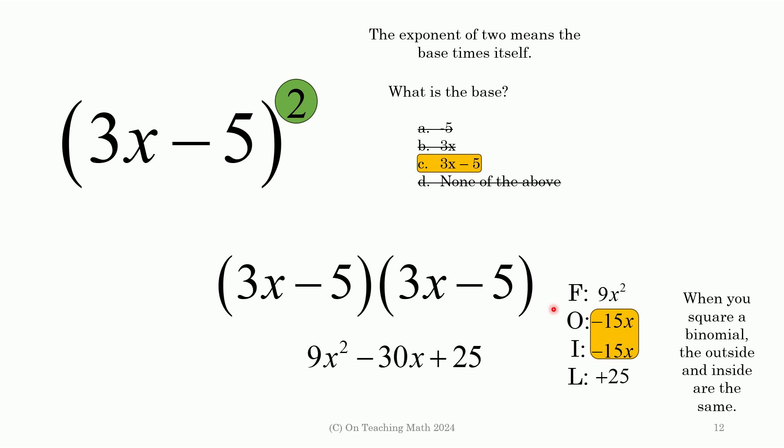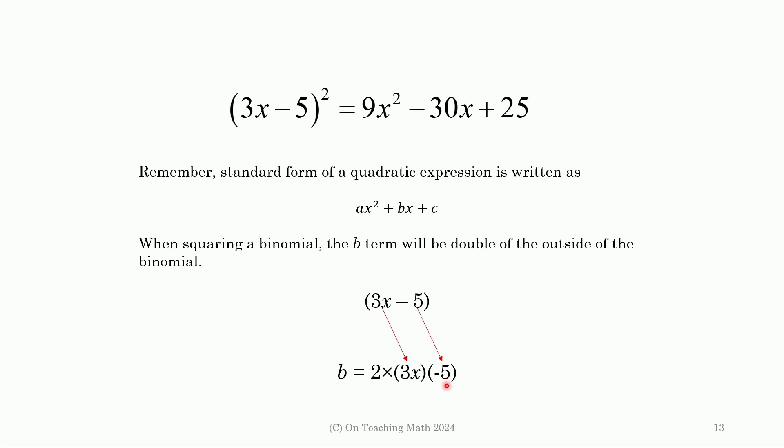Anyway, when we write it out like this, we get first 9x squared. Outside plus inside, of course, is 30. Negative 30x. And then the last two, negative 5. Alright. So here's the thing I want to show you right here.